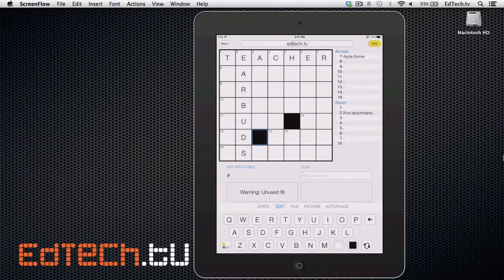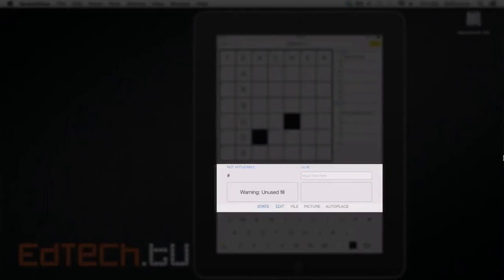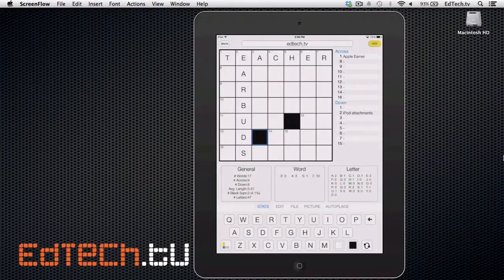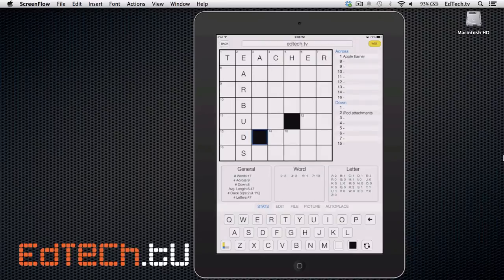Now, there are some other cool functions that we should definitely take a look at. If we're going to slide the box over to the left, we can see some information about our words. So just the general information, the word spacing, the amount of letters, that's really going to get, you know, it's probably beyond what most of us are going to want. But it might be useful if you're saying, hey, I'm not using the letter K enough, especially if you're working with a younger group, you might find that that's pretty important.